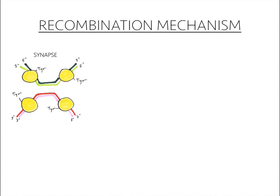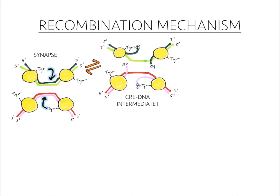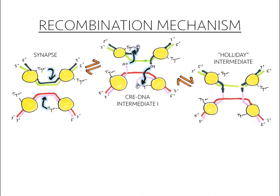We begin with each of the four subunits, shown in yellow, attached to two DNA double strands with a dimer on each strand. Beginning with the synapse, two tyrosines from two active sites attack phosphates in two DNA strands, causing the tyrosine to be attached to the phosphate groups and leaving behind two free hydroxyl groups. The hydroxyl groups then attack the phosphate groups attached to the tyrosines to bind together strands from each DNA. This intermediate is known as the Holliday intermediate.